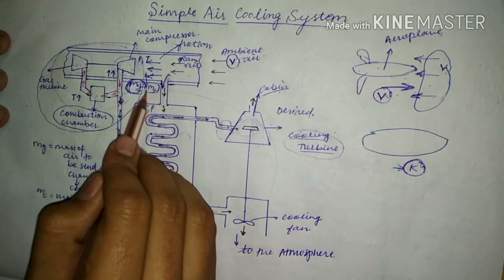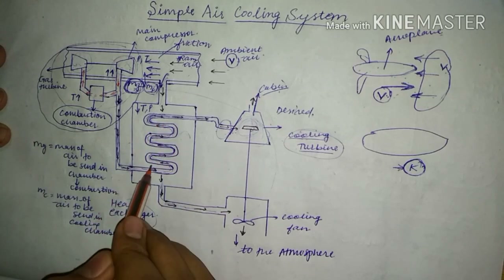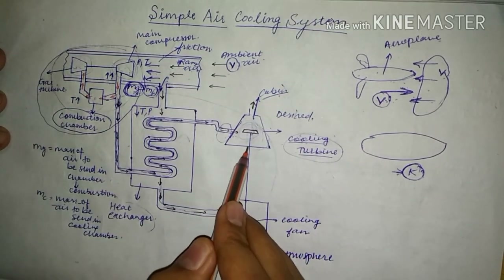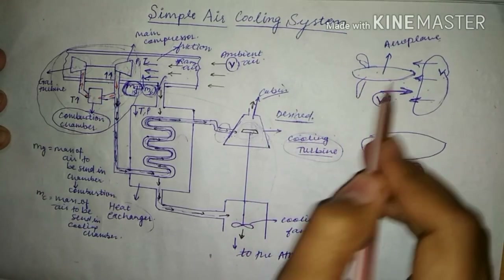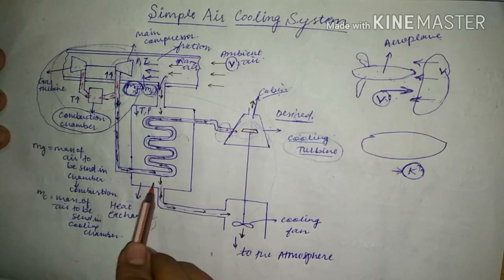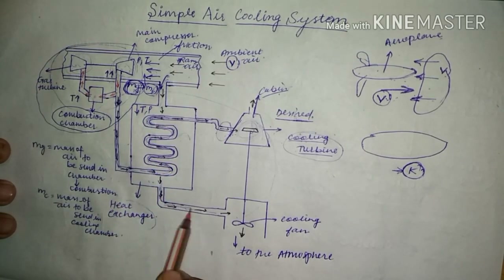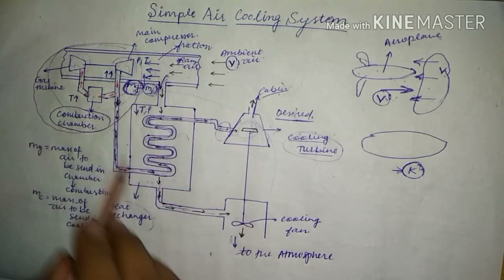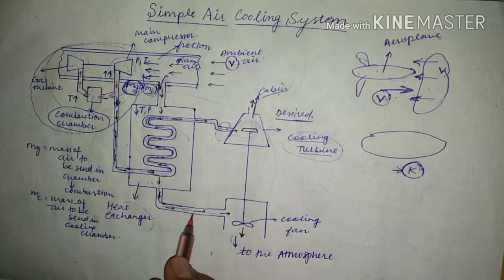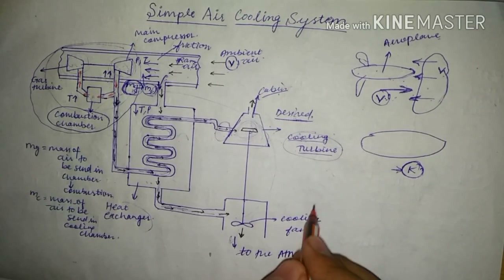The mc portion of air is fed to the heat exchanger, where heat exchange takes place and the air cools down. This cool air is sent to the cooling turbine where the temperature further decreases to the desired cabin temperature. Once the desired temperature is reached, it is sent to the cabin. The hot air exchanged in the heat exchanger is sent to the atmosphere through the cooling fan.